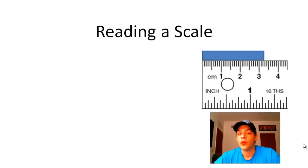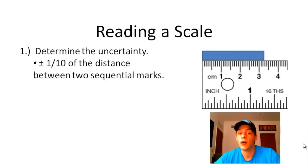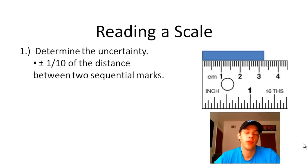Let's get into how to properly read a scale and report a scientific measurement. In this example we are going to determine the length in centimeters of a blue rectangle using a centimeter ruler. The first step is to determine the uncertainty of the scale. If you're using a digital device such as an analytical balance or a pH meter, this is very simple — the uncertainty is usually right there on the instrument or in the equipment manual. More than likely, though, you'll be using analog scales like rulers, graduated cylinders, or thermometers.